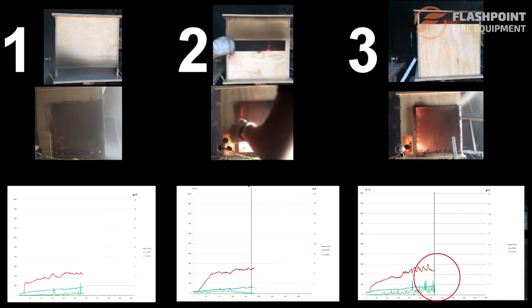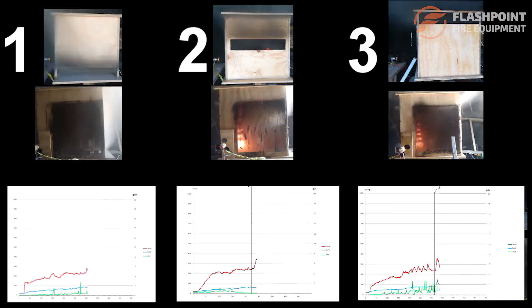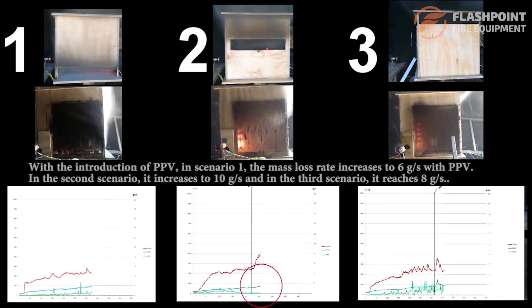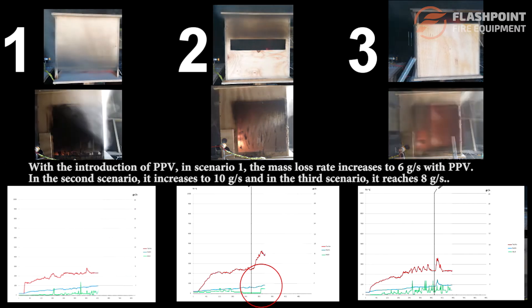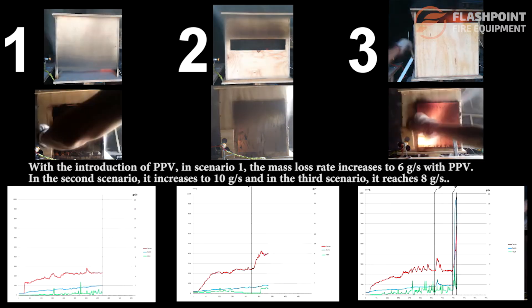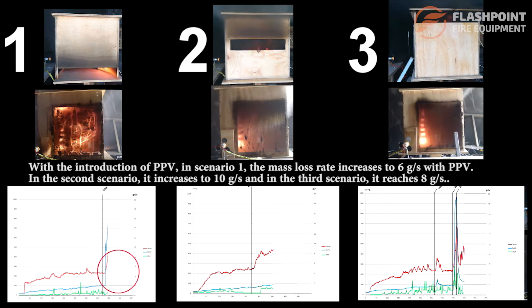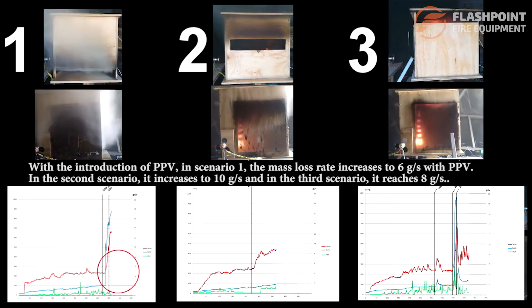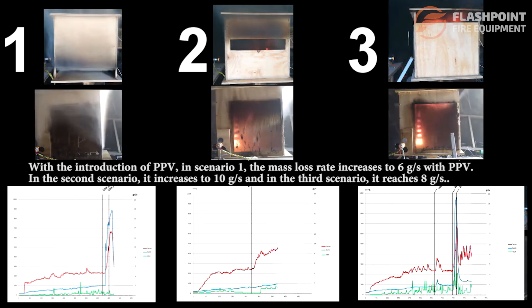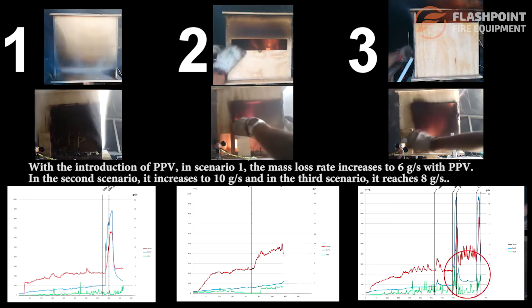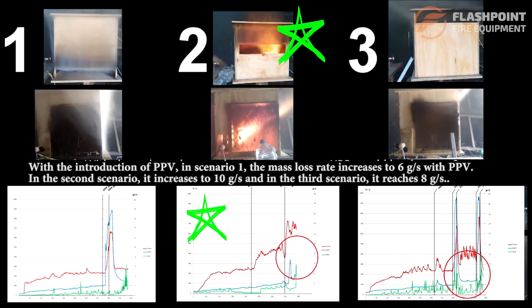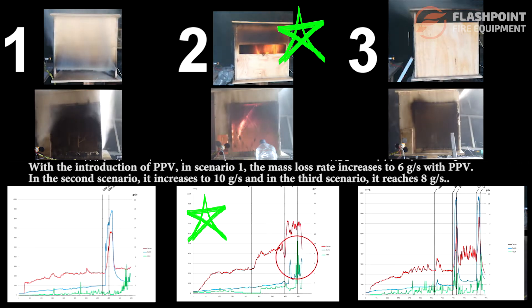Mass loss rate changes significantly with the introduction of positive pressure ventilation. In scenario 1, the mass loss rate increases to 6 grams per second with PPV. In the second scenario, it increases to 10 grams per second, and in the third scenario, it reaches 8 grams per second. Comparing scenarios 1 through 3, we can conclude that the heat release rate is highest in scenario 2, the horizontal opening at mid-compartment height.